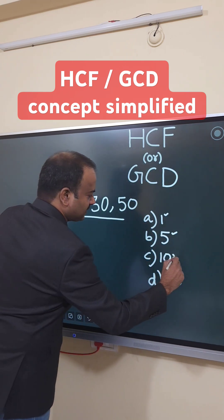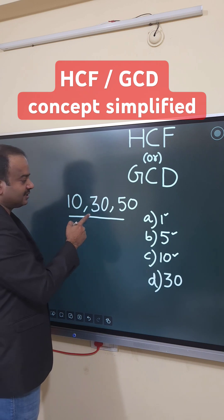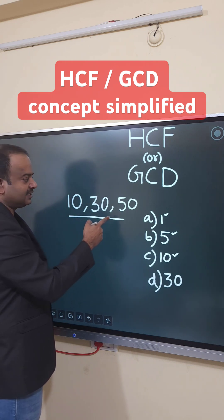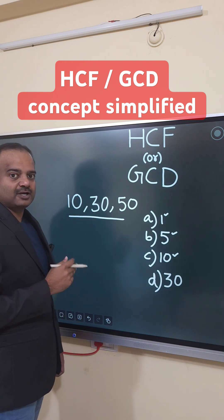Let's check 10. 10 ones are 10, 10 threes are 30, 10 fives are 50. So 10 also divides all three numbers.